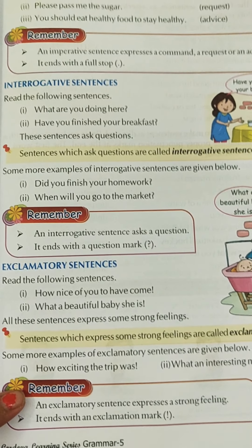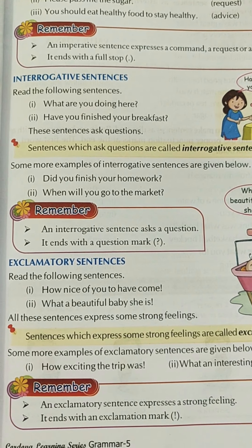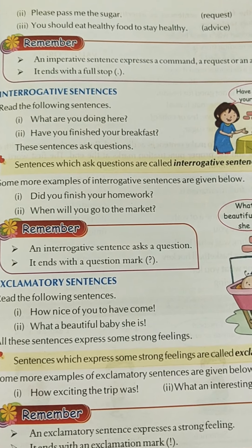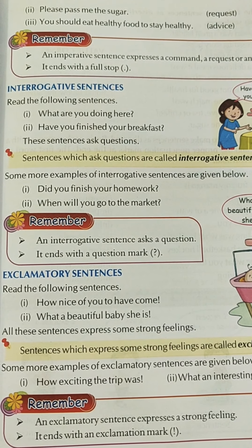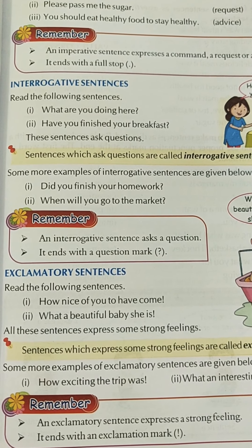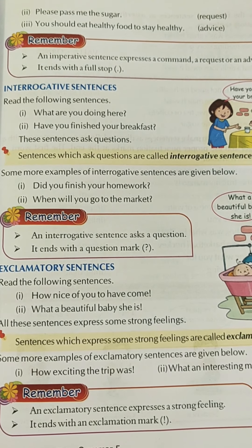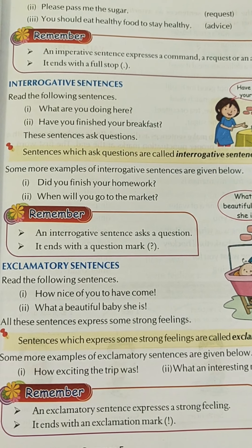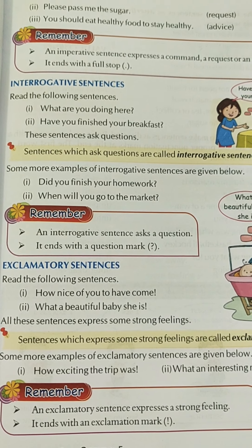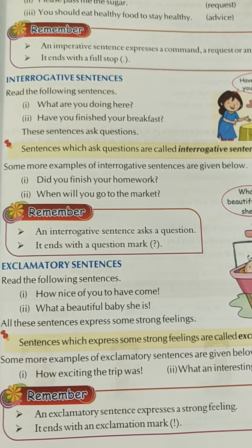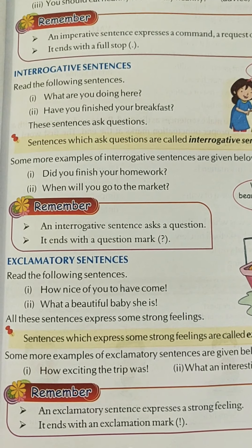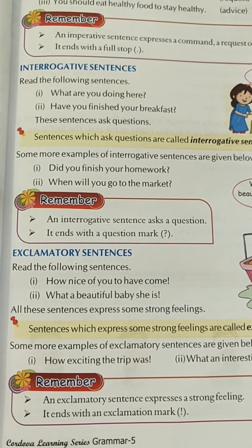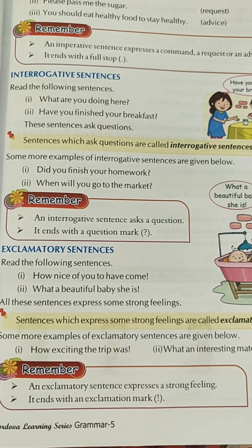Now, interrogative sentences. You know what interrogation means — it is asking questions. Sentences which ask questions are interrogative, for example: 'What are you doing here?', 'Have you finished your breakfast?', 'Did you finish your homework?', 'When will you go to the market?' An interrogative sentence asks a question and always ends with a question mark.